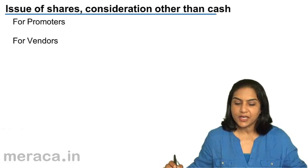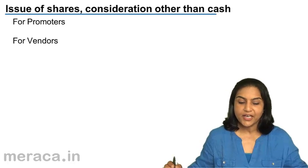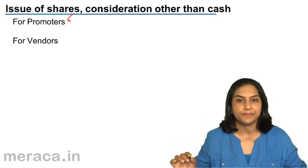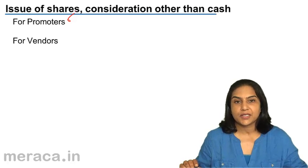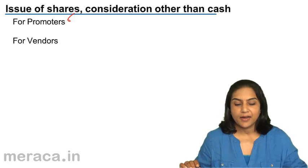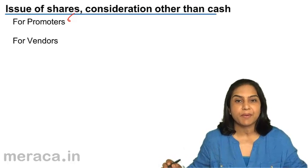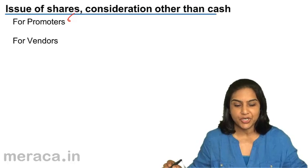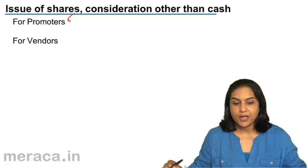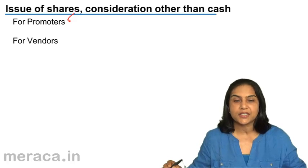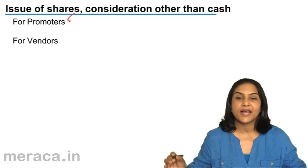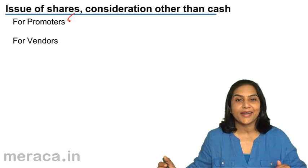So, when are shares issued for consideration other than cash? One case is when they are given to promoters. Promoters offer their services, and in exchange for the services rendered — such as legal services, technical know-how, and so on — shares may be issued by the company to them. In such cases, the company issues shares but does not get any cash.